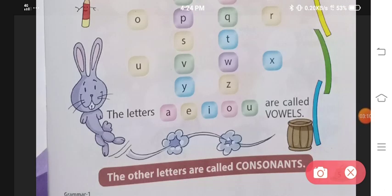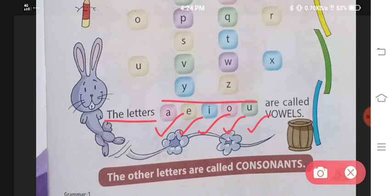Now, out of these 26 alphabets, the letters A for apple, E for elephant, I for ice cream, O for owl and U for umbrella. These five alphabets are called vowels.